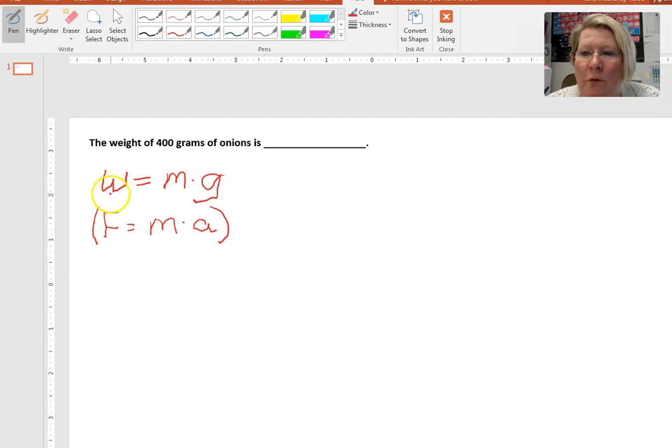Now the weight formula here is weight equals mass times gravity (W = mg), and it's really just a modification of Newton's second law that says force equals mass times acceleration (F = ma). Instead of F we're going to put in W for weight. Weight is a force so we can substitute W for F.